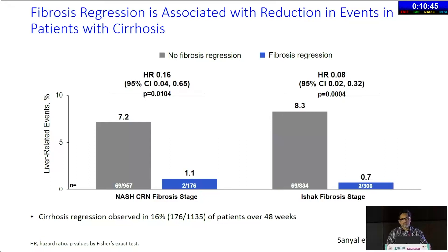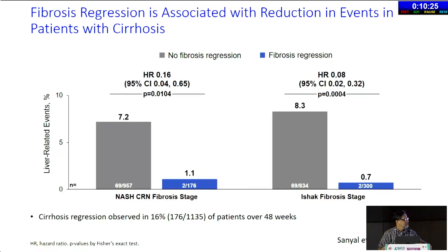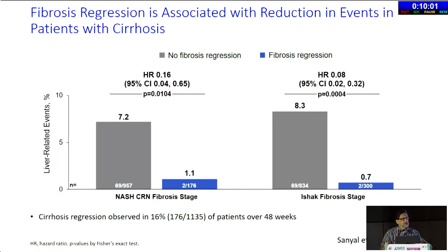Fibrosis regression is associated with reduction in events even in patients with cirrhosis. In two studies of almost 1,000 patients with cirrhosis who got two biopsies one year apart, 176 patients on the second biopsy no longer had cirrhosis — most of them were F3. Remarkably, in these patients who had less fibrosis on the second biopsy, there was an 85% decrease in clinical outcomes. This data is now published; we originally presented it in 2020.